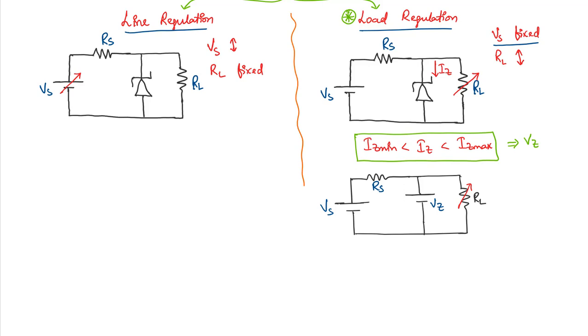Now the current that flows through the series resistance is Is and obviously the current that flows through the zener diode is Iz and current that flows through load resistor let us take it as Il. Is will be equal to Vs minus Vz over Rs.